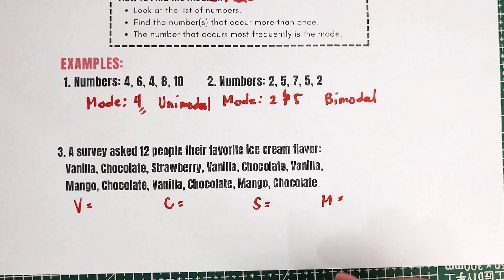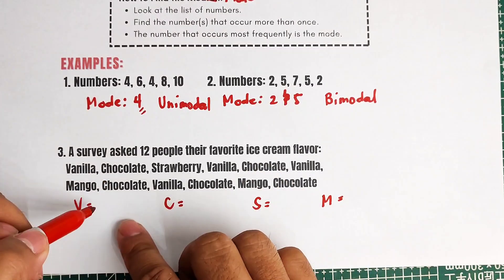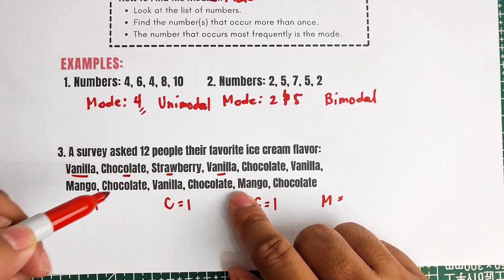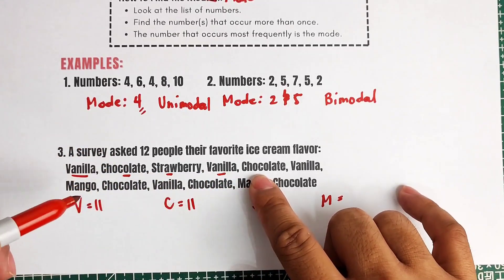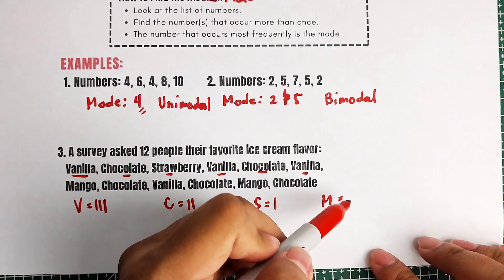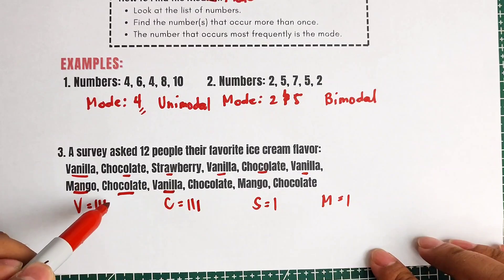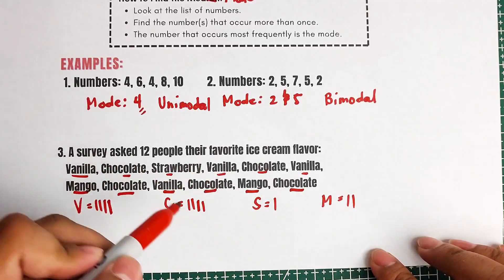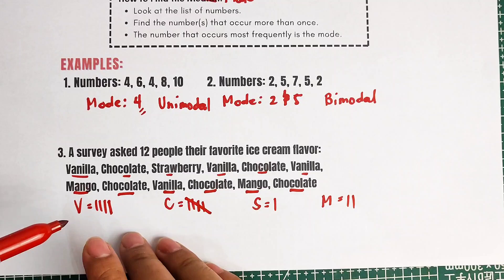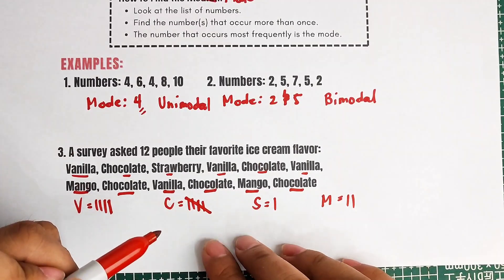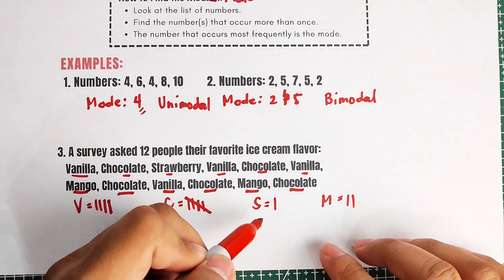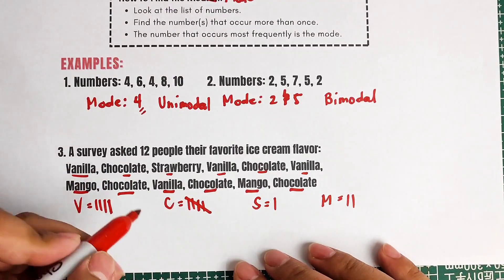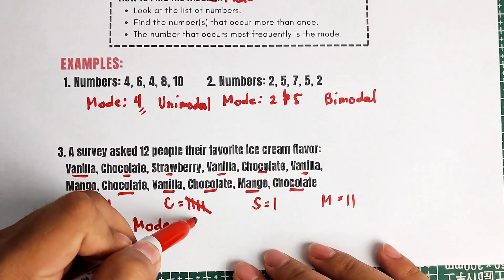Tallying the votes: vanilla gets one, chocolate one, strawberry one, then vanilla another, chocolate another, vanilla, mango, chocolate, vanilla, chocolate, mango, and lastly chocolate. Comparing the results: vanilla has 4 votes, chocolate has 5 votes, strawberry has 1 vote, and mango has 2 votes. Meaning the most frequent — the mode of this ice cream flavor — is simply chocolate.